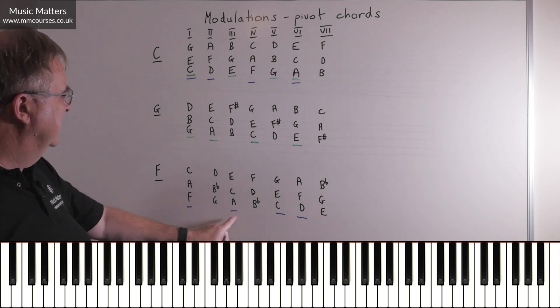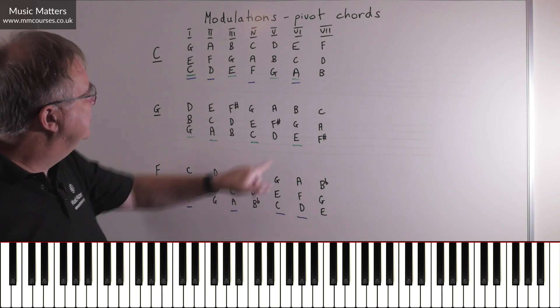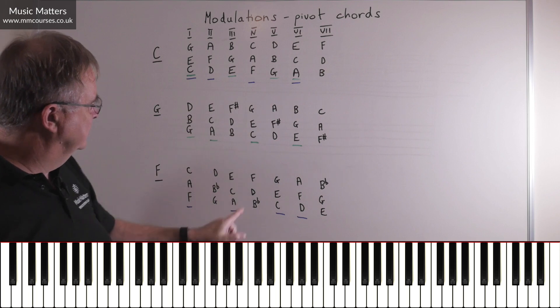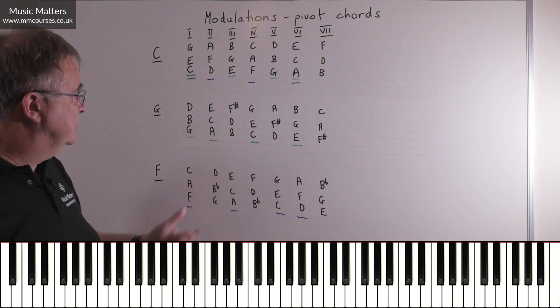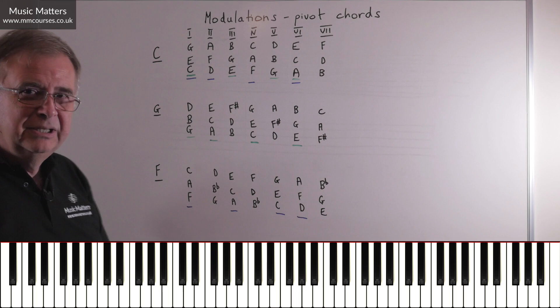So you might just think, well, chord III is not the strongest chord, so I could use chord VI as a pivot chord to take me to chord III in F. It's not impossible, but there are other, stronger possibilities.